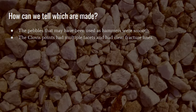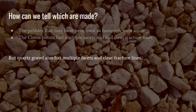The pebbles that may have been used as hammers by chimpanzees were smooth whereas the Clovis points had multiple facets and had clear fracture lines. But quartz gravel like this also has multiple facets and clear fracture lines. So the existence of fracture lines and facets is not enough.